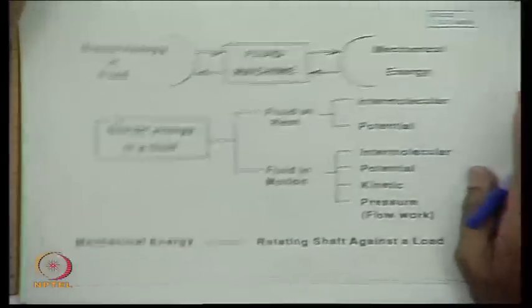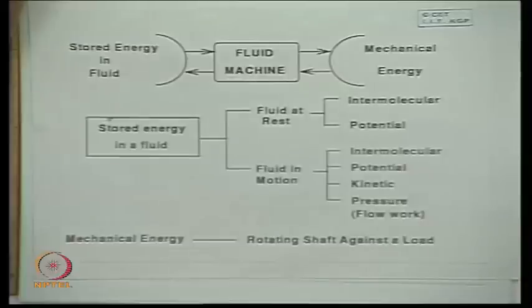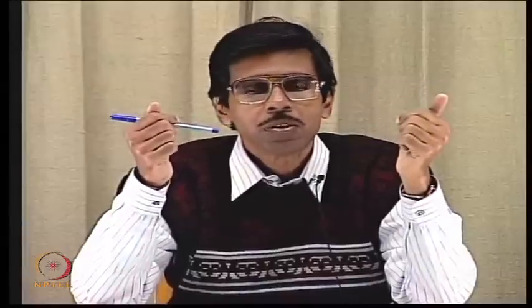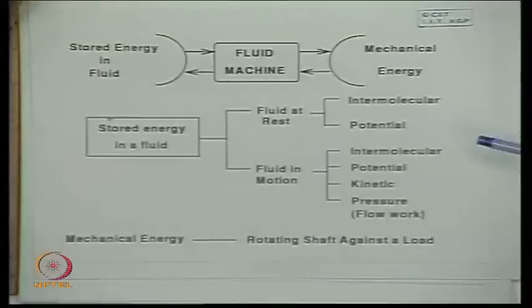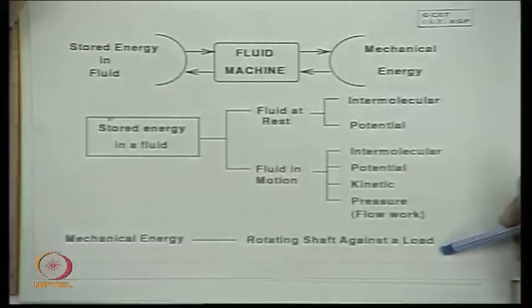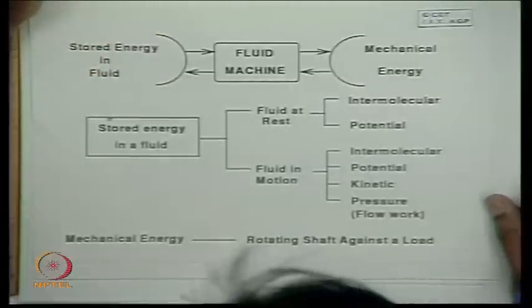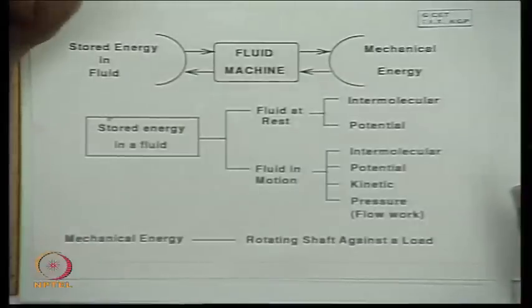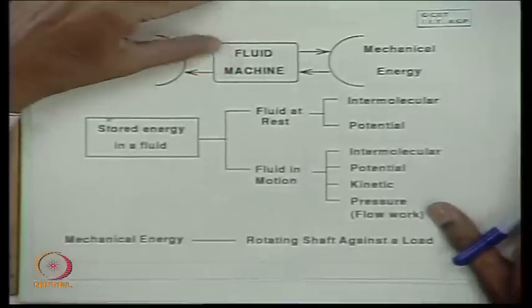Mechanical energy is usually obtained or transmitted through a rotating shaft against a load. This load depends upon the use. For example, a large part of the mechanical energy obtained from a fluid machine is used for electrical purposes — to convert it into electrical energy — in which case the rotating shaft drives an alternator. So mechanical energy is obtained from or given to fluid machines in the form of rotation of a shaft against a load.